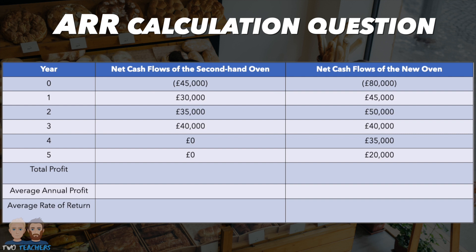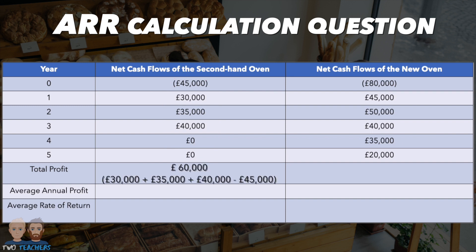Hopefully you've all now had a go at calculating the ARR for the two investment options which the bakery business is considering. So let's walk through the calculations starting with the second-hand oven. The first thing you will notice is that the total profit wasn't given to you for either option in this scenario, so that's the first calculation you'll have to do. For the second-hand oven, that would be inflows of £30,000 plus £35,000 plus £40,000 minus the cost of the investment of £45,000, giving the business a total profit of £60,000.